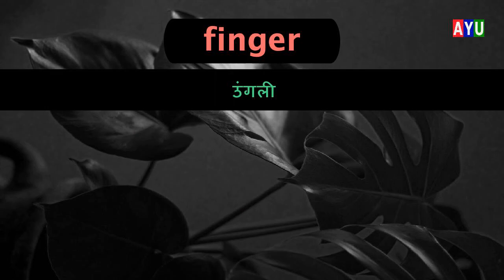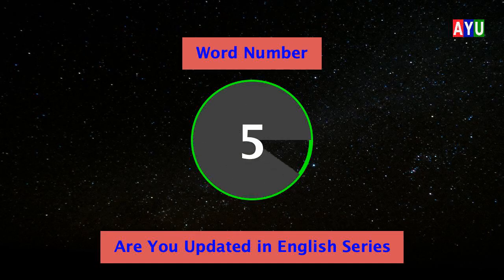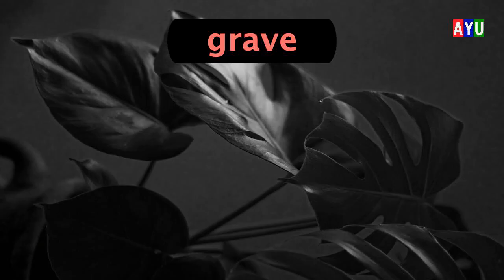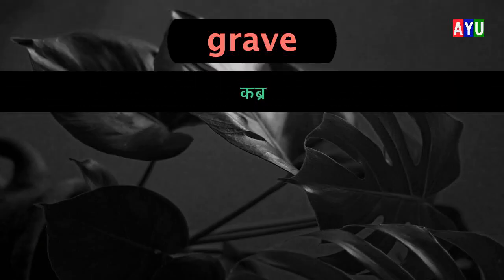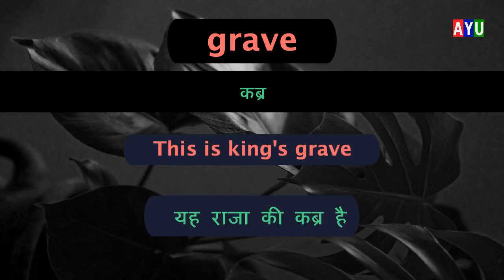Fifth word: Grave. Grave means Kabr. Let's see one example — This is king's grave. Yeh raja ki kabr hai.